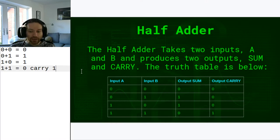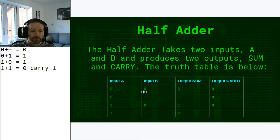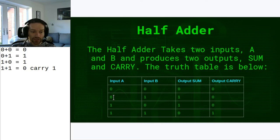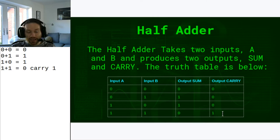Our half adder is going to have two inputs — A and B, the things being added together — and two outputs: one for the sum and one for the carry. If input A is 0 and B is 0, the sum is 0 and the carry is 0. If A is 0 and B is 1, the sum is 1 and the carry is 0. If A is 1 and B is 0, the sum is 1 and the carry is 0. And if A is 1 and B is 1, the sum is 0 and the carry is 1.